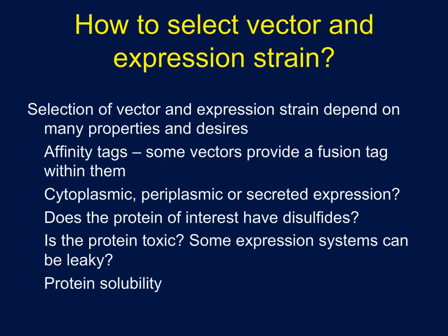Which host and plasmid combination do you use? Making that decision depends on what you want. Do you want an affinity tag? Some vectors have them, some don't. Do you want the protein expressed to the cytoplasmic part of the cell, the periplasm, or even secreted? Certain vectors have particular leader sequences that allow you to control the localization of expression. Does your protein have disulfides? There are certain cell strains that accommodate disulfides better than others. Is your protein toxic to E. coli? Some expression vectors are more leaky — even without adding IPTG you may have some basal expression. If your protein is toxic, you might use a vector with a tighter promoter element. There are many different requirements that go into selecting a vector-host system.